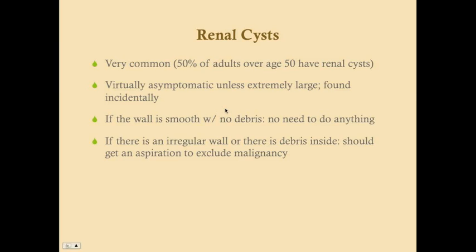Renal cysts are asymptomatic and found incidentally. If the cyst has a smooth, symmetrical wall, is homogenous inside with no debris, then you don't need to do anything. However, if there's a highly irregular wall or debris inside, you should aspirate the cyst to exclude malignancy. Not all irregular renal cysts are malignant — most are benign — but you do need to rule out malignancy.